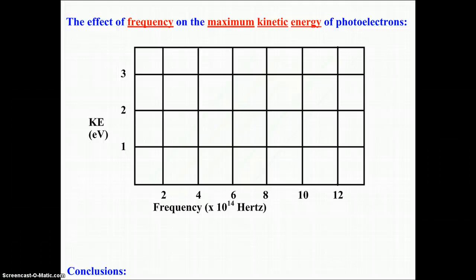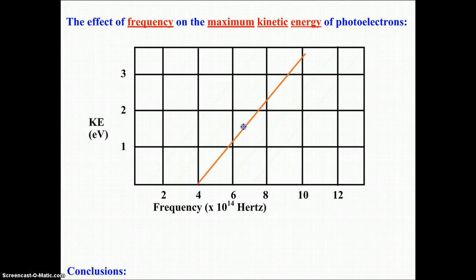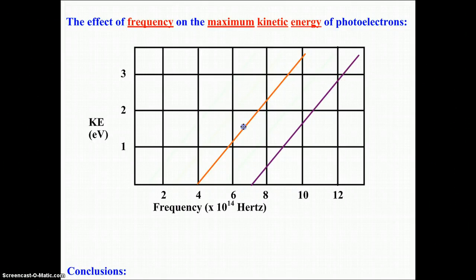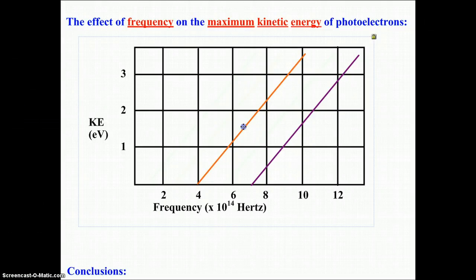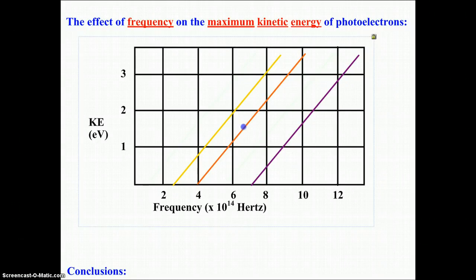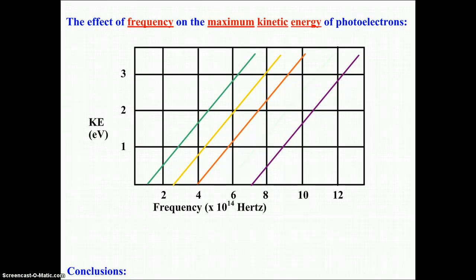Nonetheless, as we just demonstrated with the simulation, what Planck was finding was that as he experimented with various metals, suppose metal A gave this particular slope. When he experimented with metal B, it maybe gave him that particular slope. Metal C maybe gave him that slope, and then metal D maybe that slope right there.